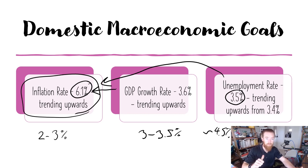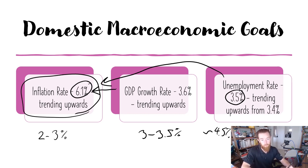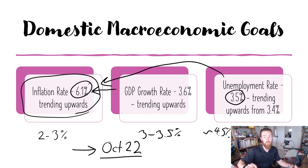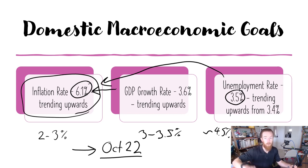So: 6.1% for inflation, 3.6% for annual GDP growth, and 3.5% for the unemployment rate. These are all relevant as of October 2022. What I highly recommend is in exams when you're talking about any data, you should date when you got that data to make sure that the person marking it knows when it's from. So if the data has changed since the date that you got it, you're not going to be penalized for that.